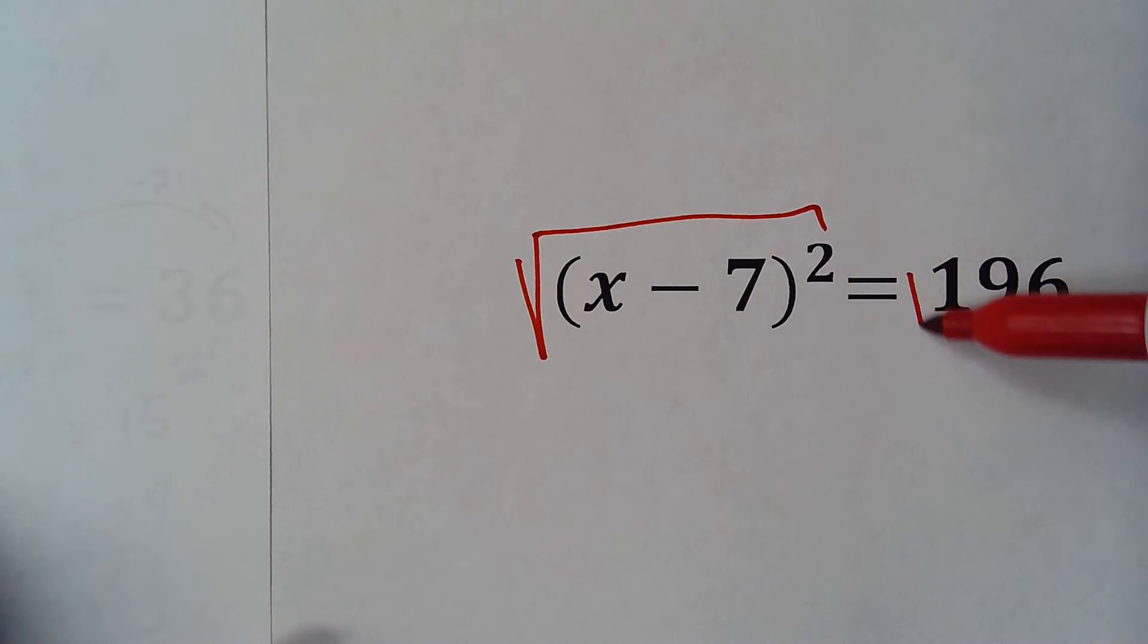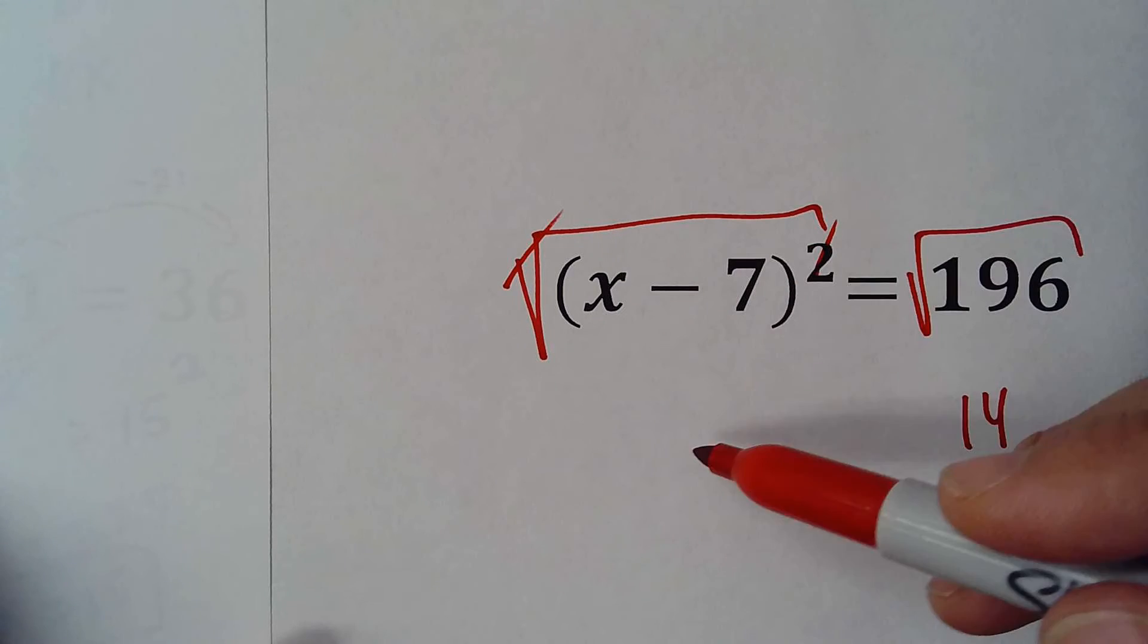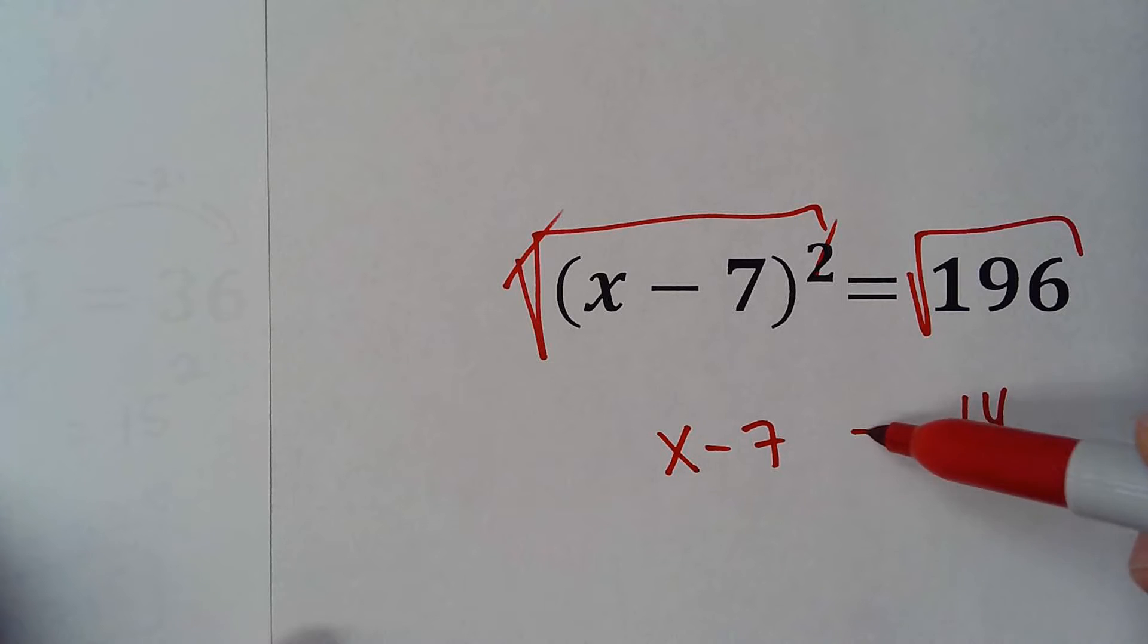Square root both sides. Square root of 196 is 14. I cancel the 2 with the root, so I have x minus 7 equals 14.